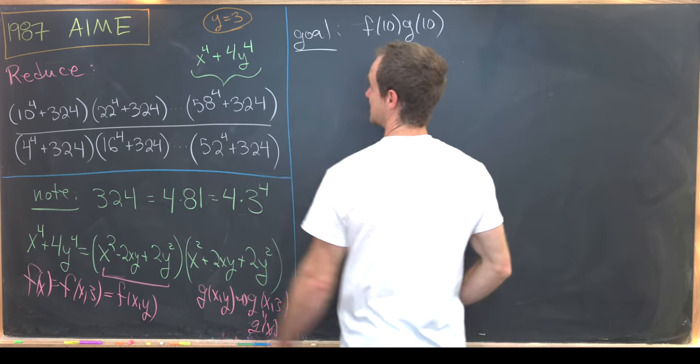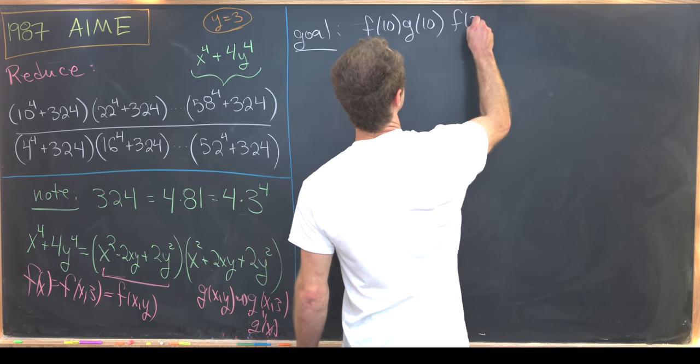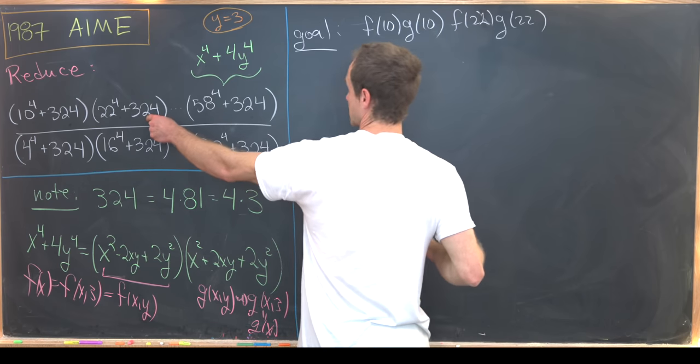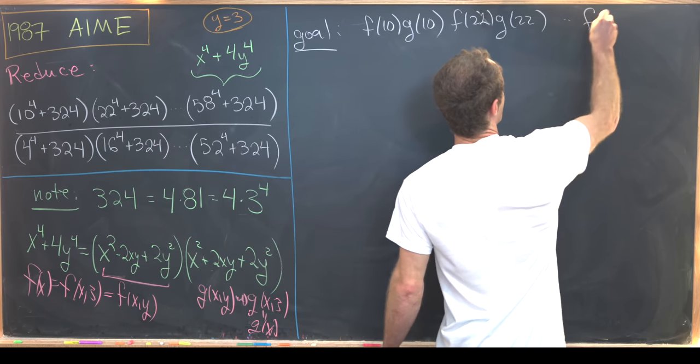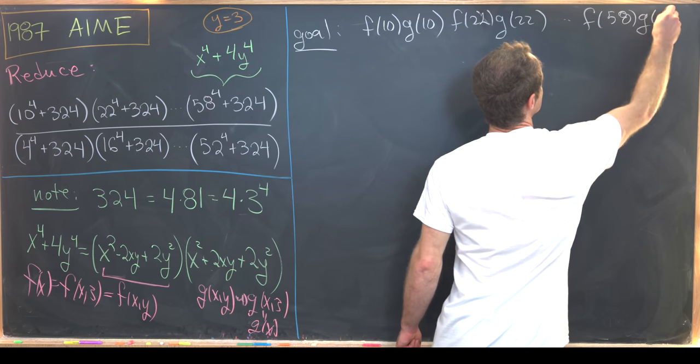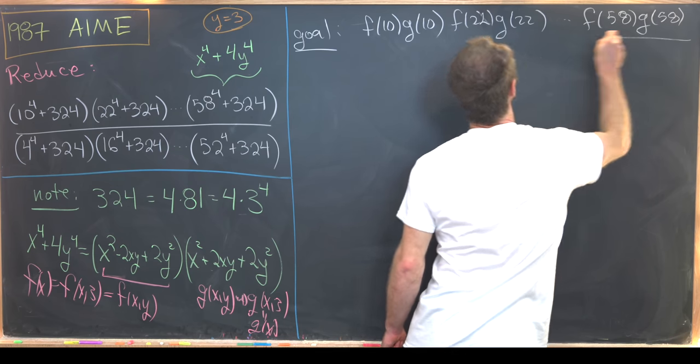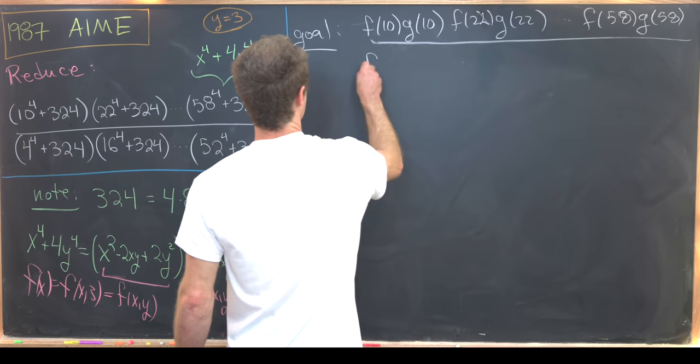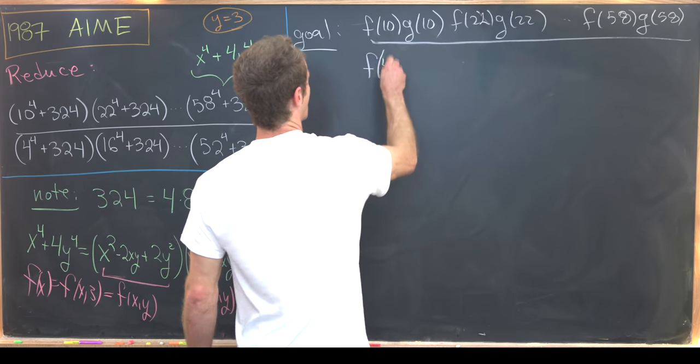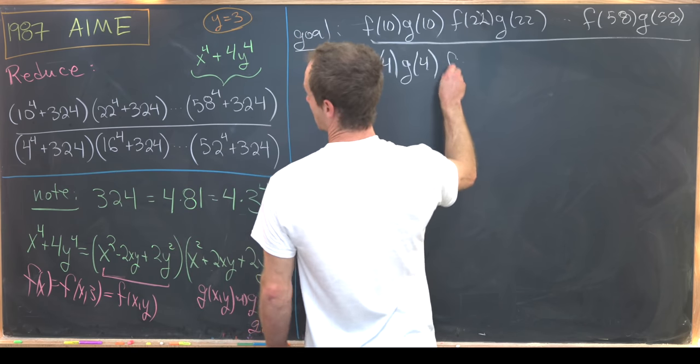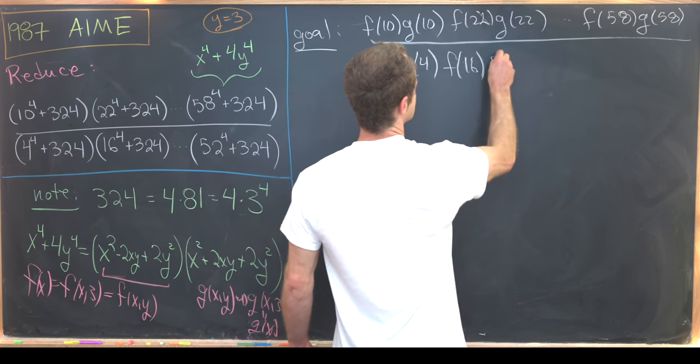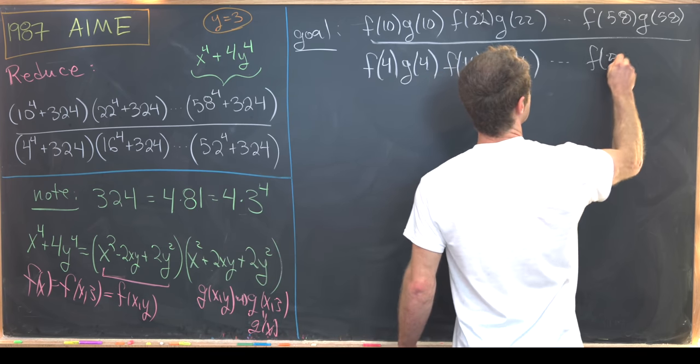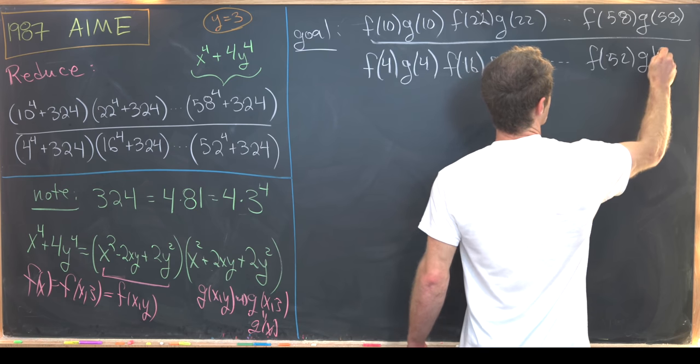And then notice for this second bit, we'll have f of 22 times g of 22, all the way up to f of 58 times g of 58. And then similarly in the denominator, we have f of 4 times g of 4, and then f of 16 times g of 16, all the way up to f of 52 times g of 52.